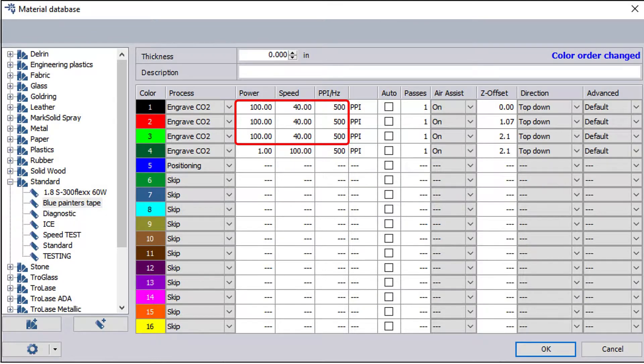Assign the same power and speed settings for the three colors that will be used for engraving and assign the fourth color 1% power at 100% speed making this part a thin box that only takes a few seconds to process.